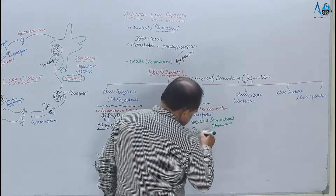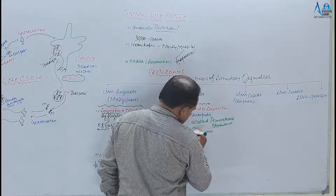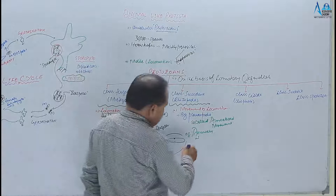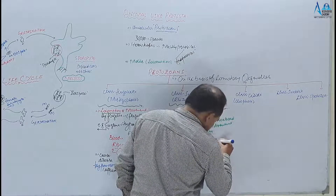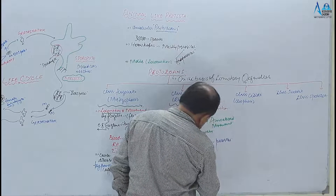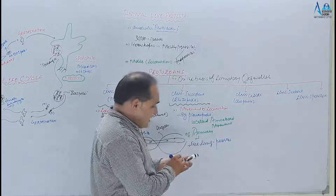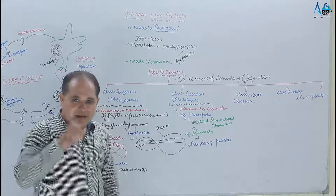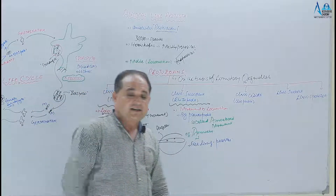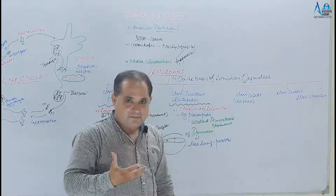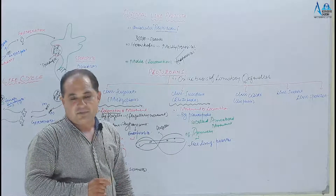Amoeba free-living bhi hai aur parasite bhi. Parasitic Amoeba GI disorders cause karta hai — ciliary infection ya dysentery condition bhi cause hoti hai. Water mein free-living bhi hote hain. Inme kuch aise species hain jinki presence yeh clue deti hai ke there is petroleum deposition in the sea — jahan petroleum aur gas engineers in species ki presence dekhte hain, wahan petroleum deposition ki possibility hoti hai.